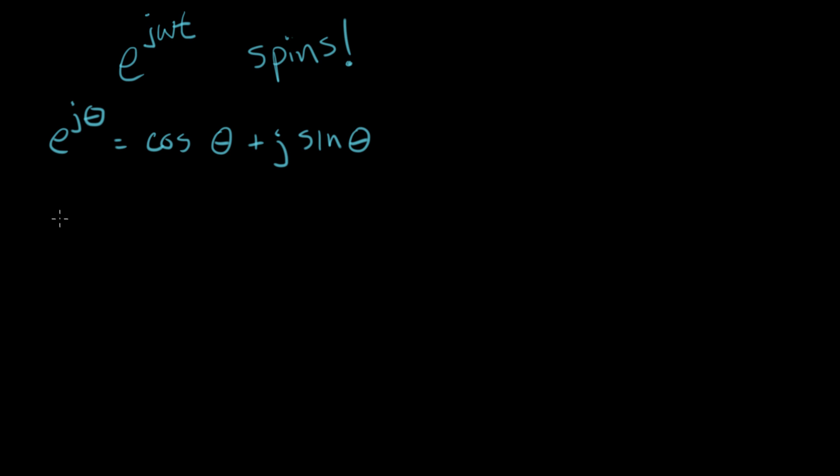And the other form is with a negative up in the exponent, and we say e to the minus j theta equals cosine theta minus j sine theta.